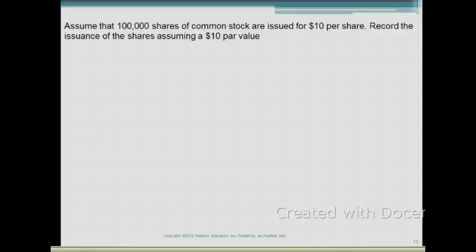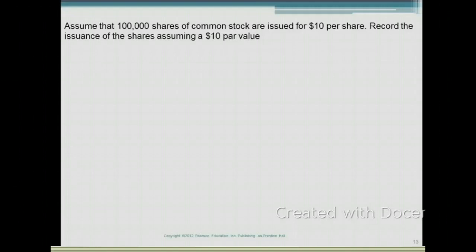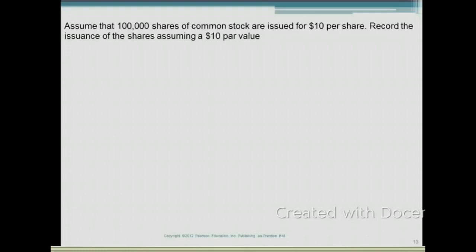Let's take a look at when shares are issued at par value. Remember, par value is just an arbitrary amount that a company sets for the value of their stocks. We're going to go through a series of questions to explain how to account for common stock. Read each question carefully, watch my explanations, then rewind the video and do the question on your own, putting it down on paper. This question deals with issuing shares at par value. Assume that 100,000 shares of common stock are issued for $10 per share. Record the issuance of the shares assuming a $10 par value.